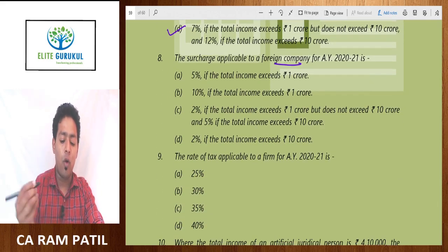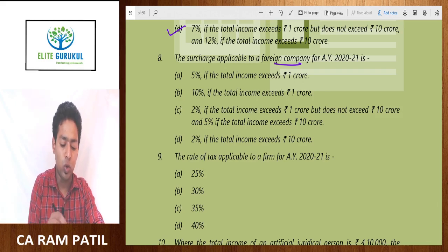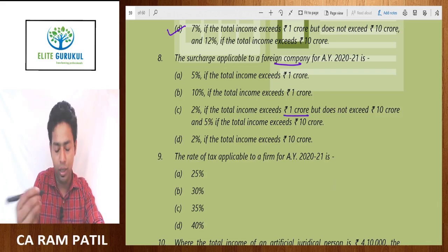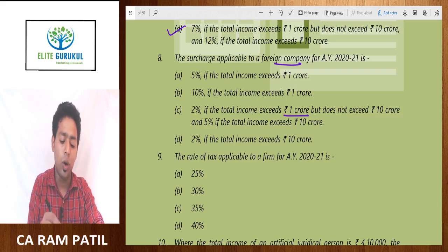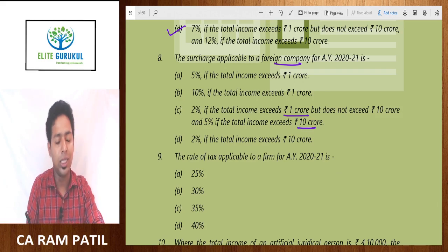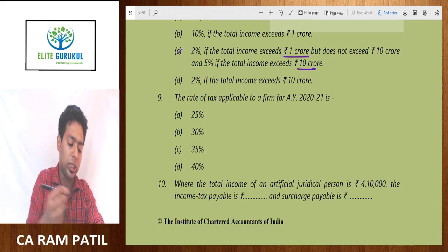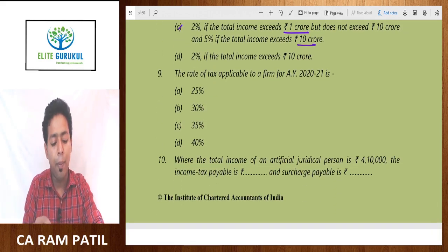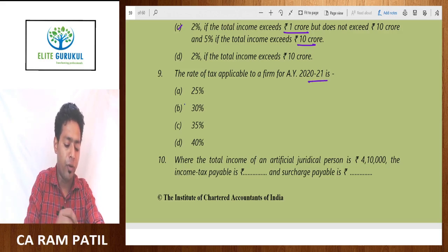The surcharge rate applicable to a foreign company is very low — 2% if total income exceeds 1 crore but does not exceed 10 crore. So the answer is option C. The rate of tax applicable to a firm for AY 2021 is simply 30%.